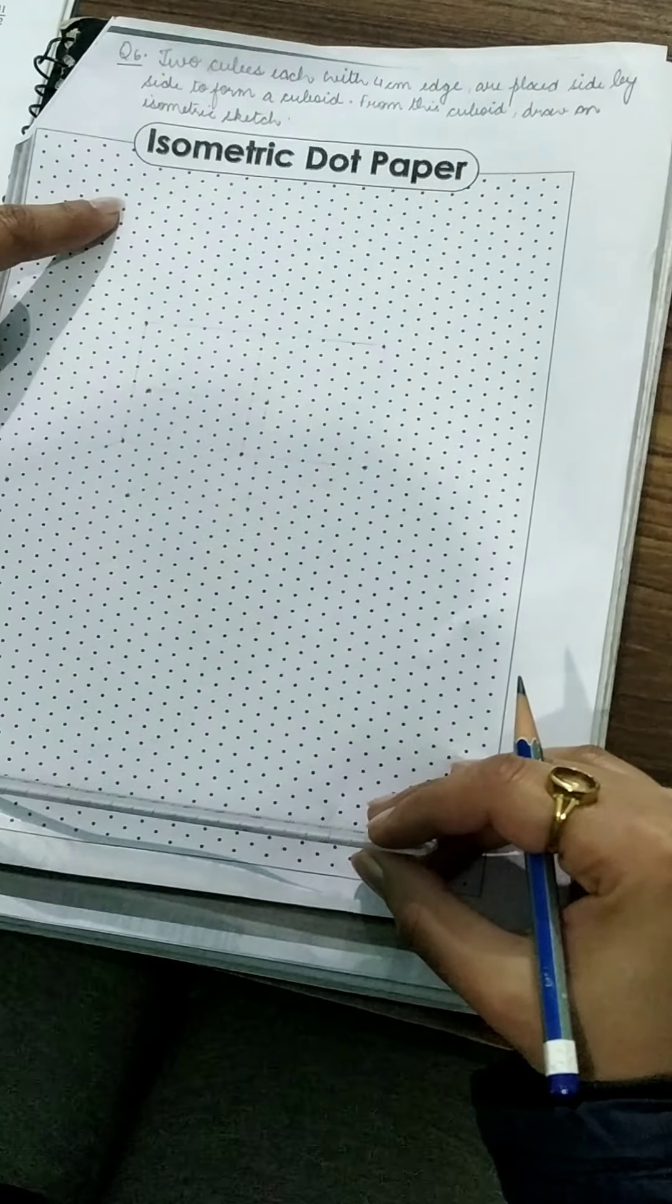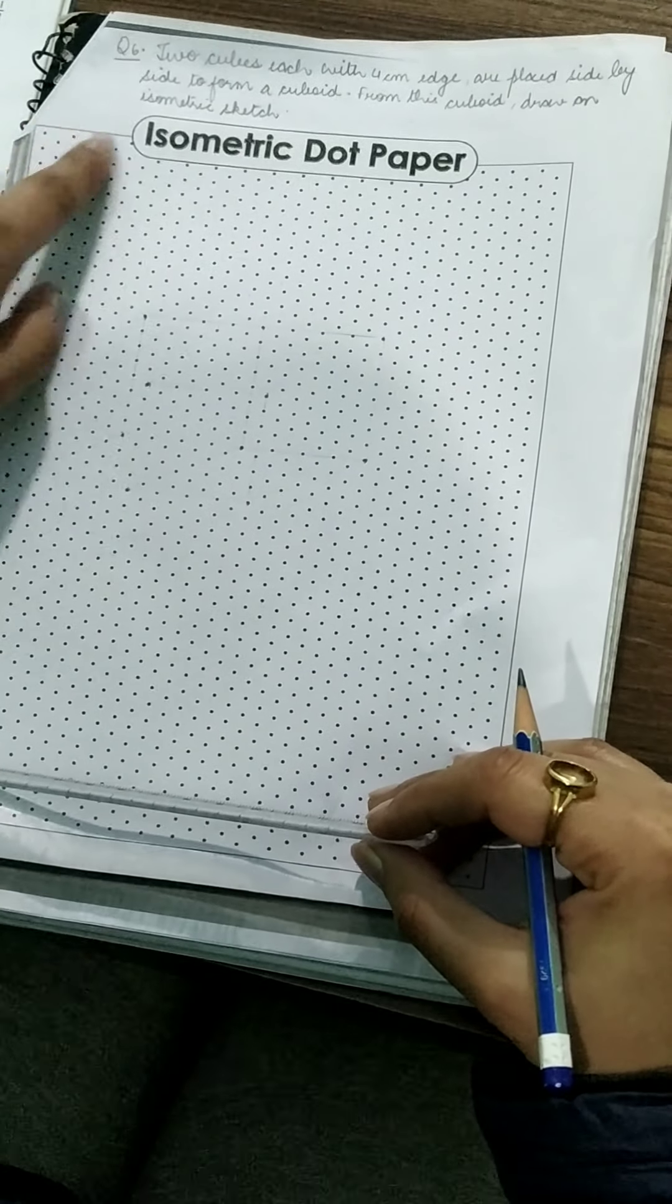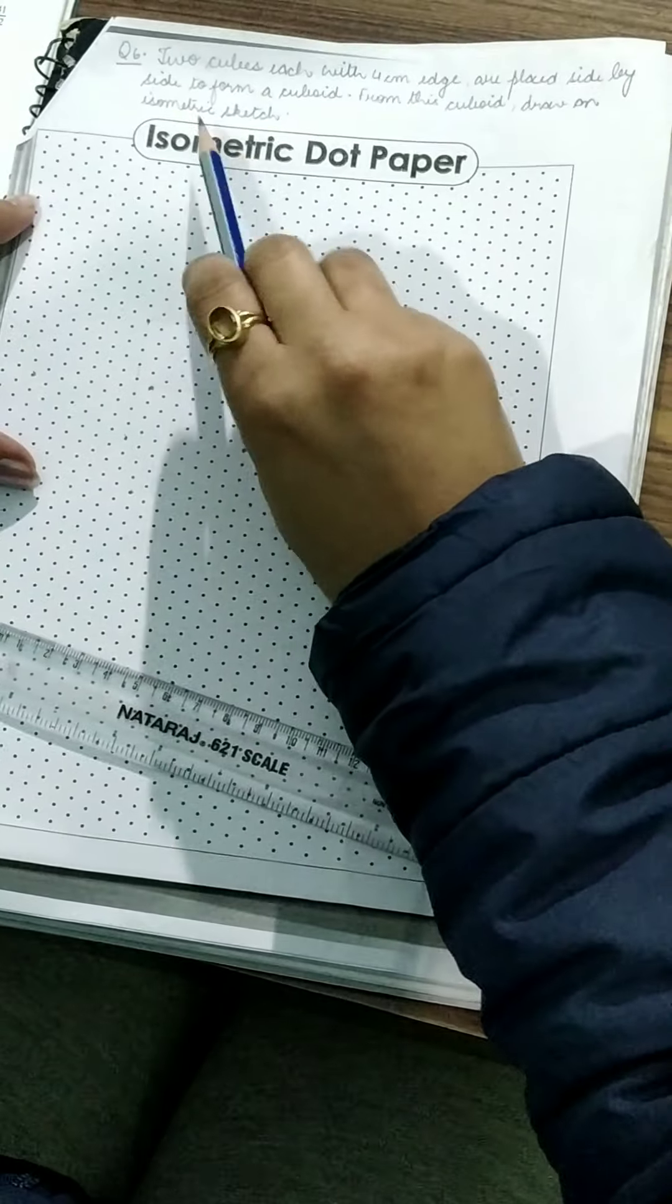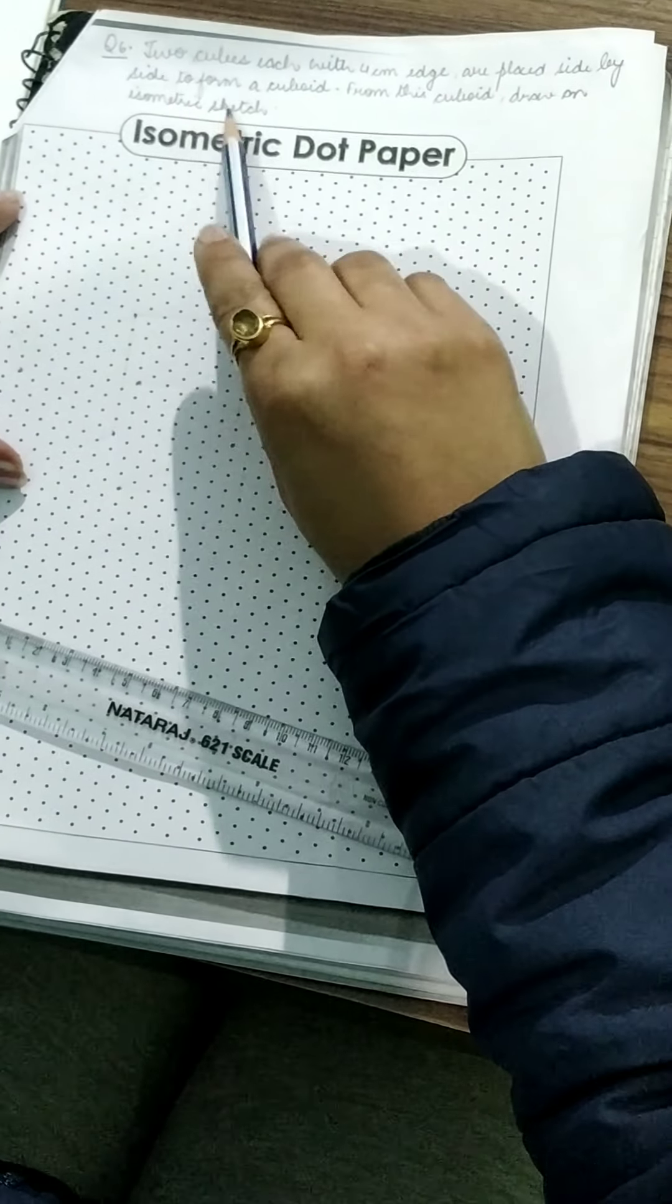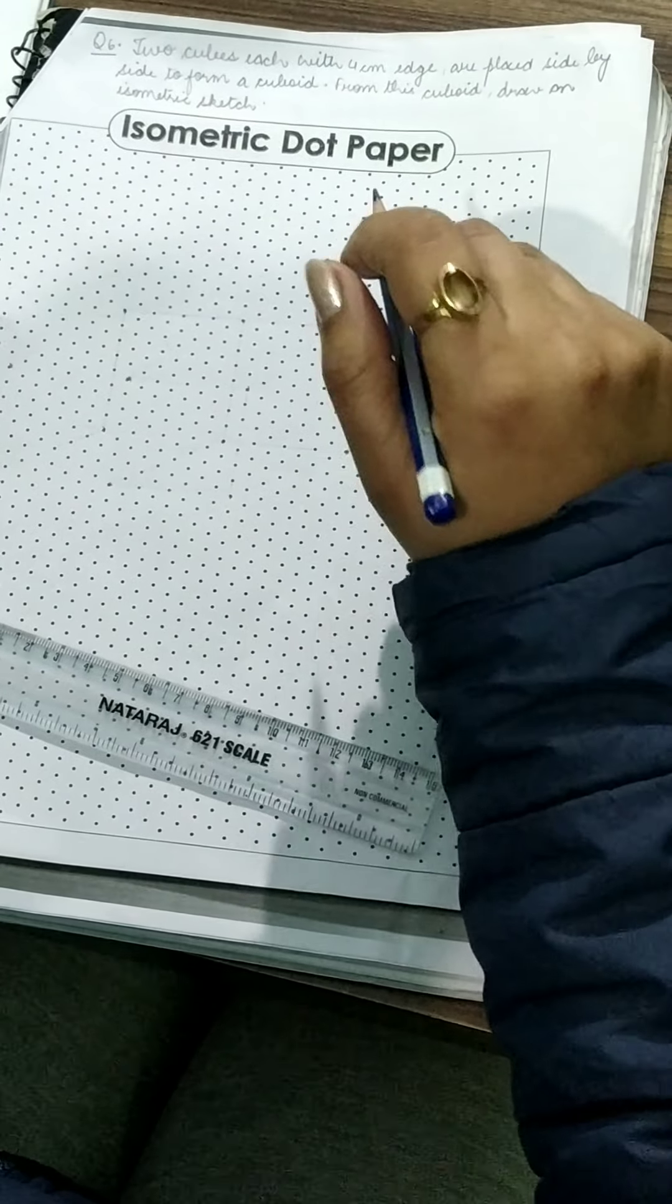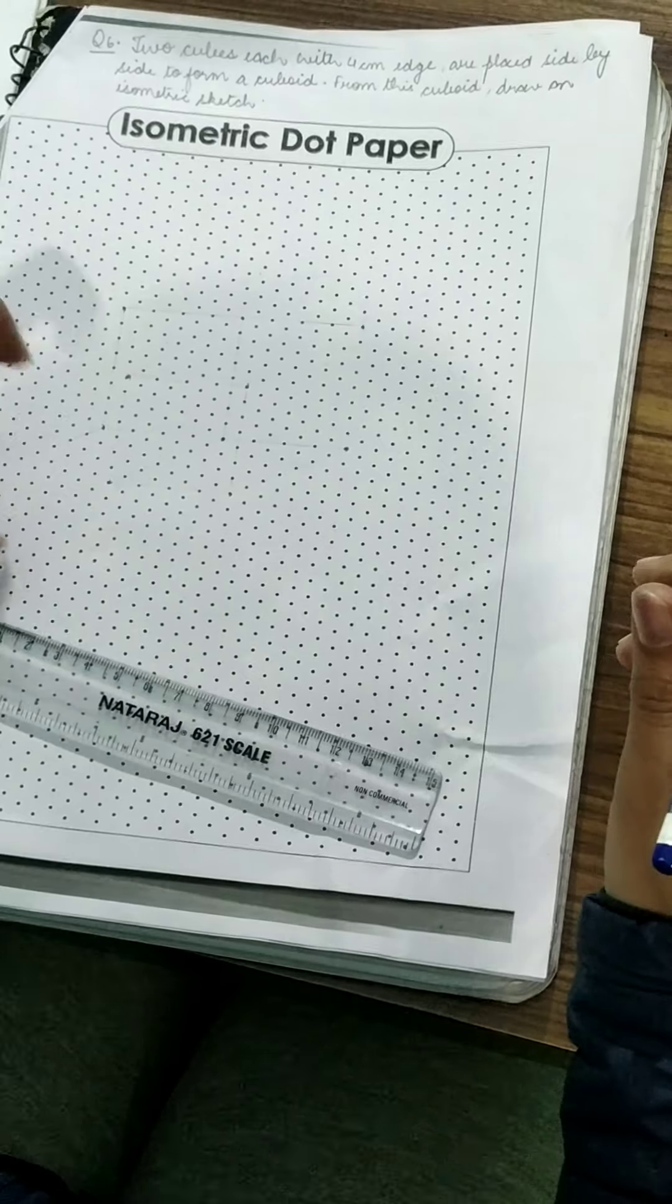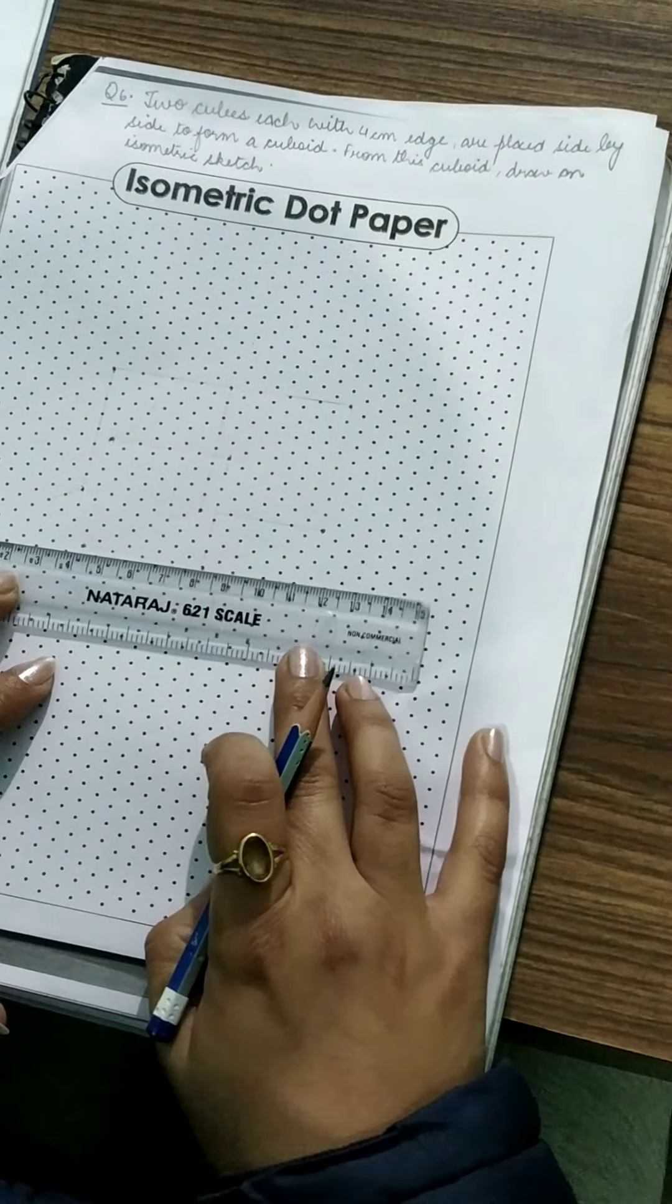So try to take it from the stationary shop. First of all, 6th question of exercise 18. That is, 2 cubes each of sides 4 cm edge are placed side by side to form a cuboid. From this cuboid draw an isometric sketch. So what we have to do children, we have to draw 2 cubes over here and they should be adjacent. How to draw?